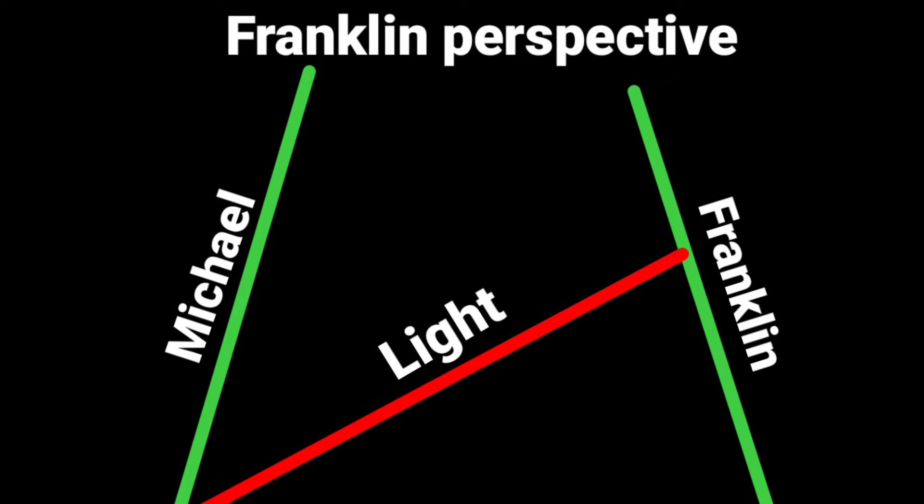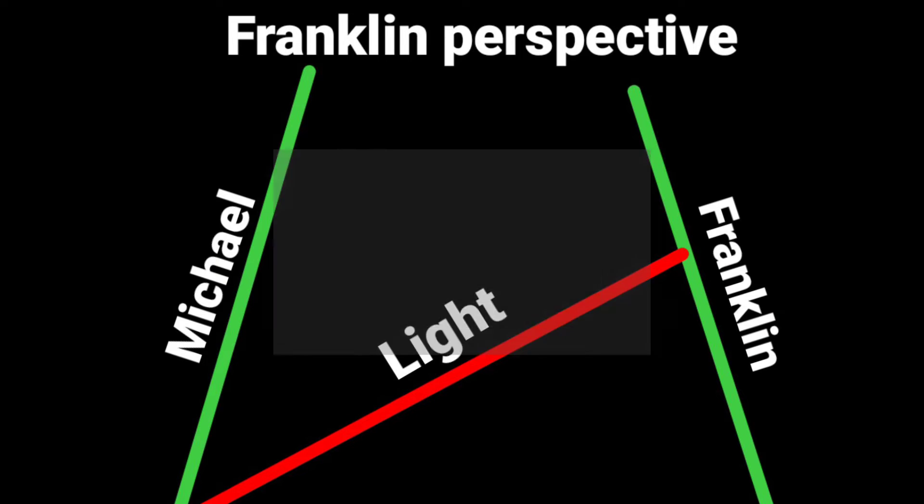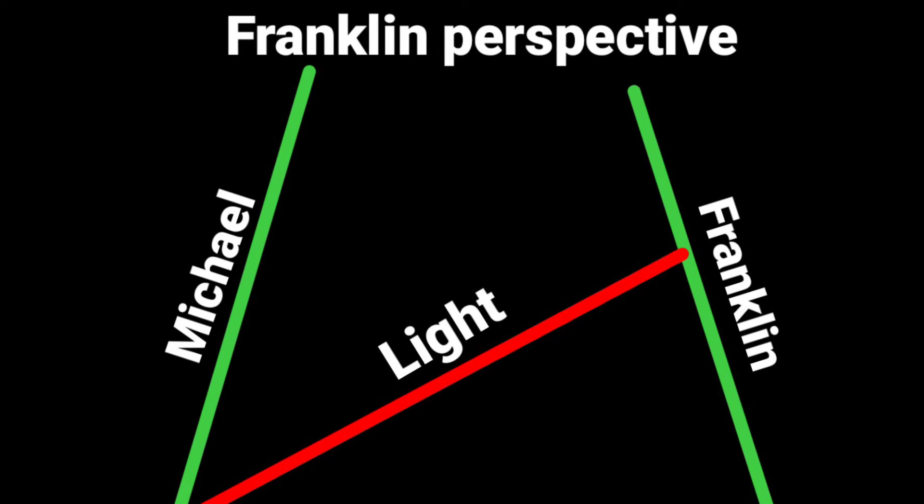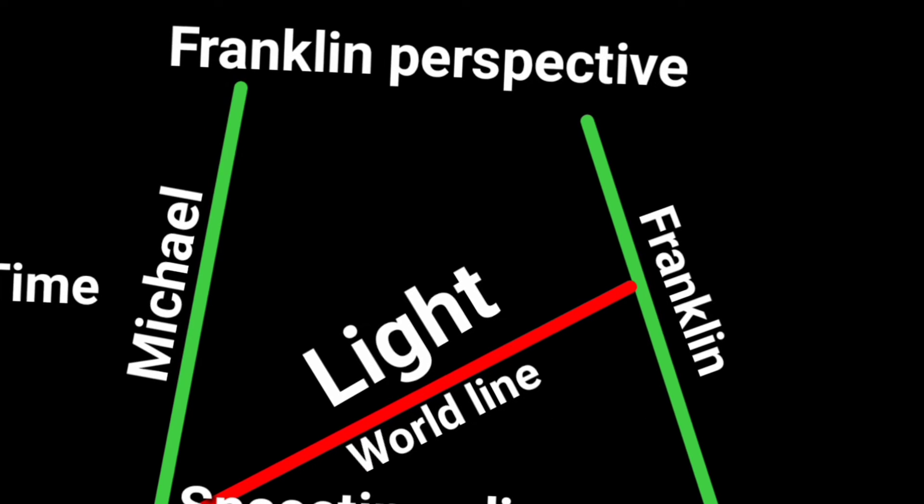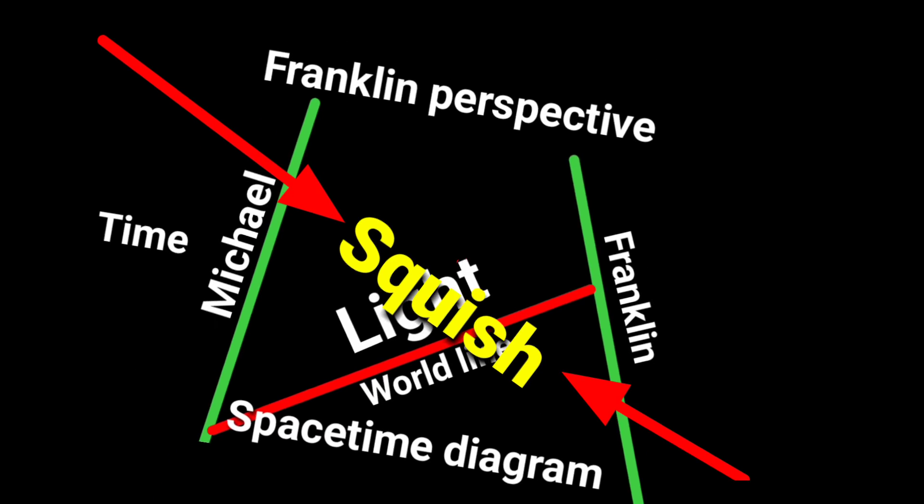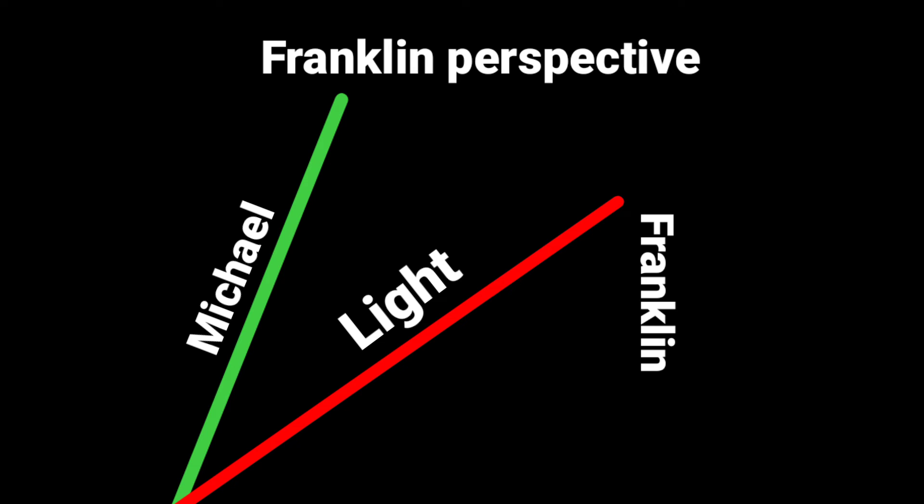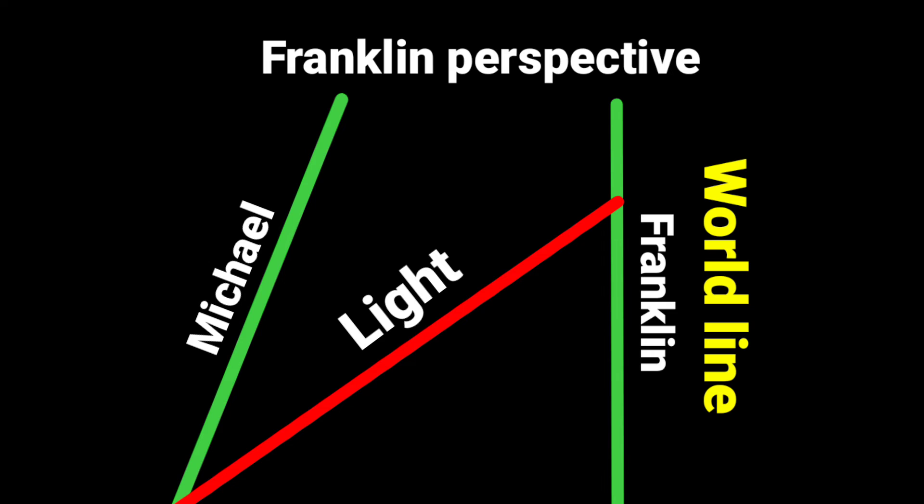First we make the frames of Franklin into a single solid block, means to make a whole frame into a single frame. Then you must stretch the frame along the light and squish it in the same amount but in right angle. And Franklin line gonna become a world line and represents world on Franklin's perspective.